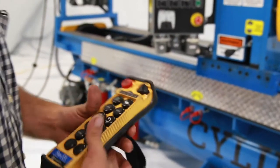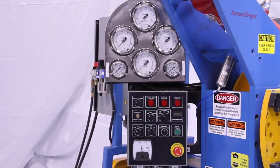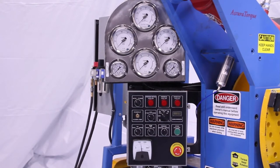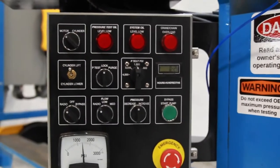And in the case that the remote wouldn't work or couldn't be used, we've got a control box here. All the switches are on here to power it up without the remote and operate it manually.